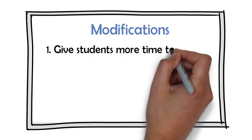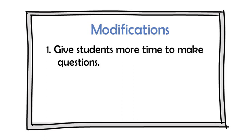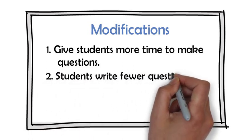Okay, what if you want to modify for lower levels? Well, you could give students more time, or have them write fewer questions for each other. Or, if you think this is just too much for your group, you could skip this task altogether and spend more time on the gist task and the final fluency task.